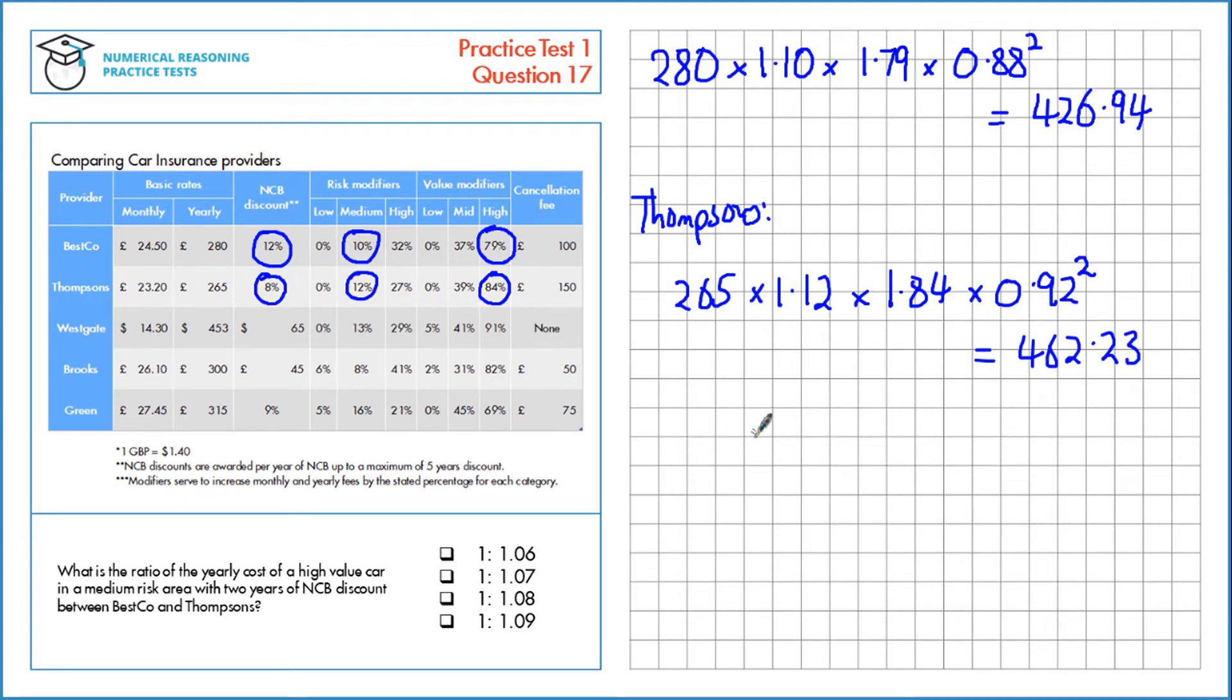Now let's form the ratio. We've got Besco to Thompsons: £426.94 to £462.23. We'll divide by the smallest number. So we have 1 to 1.08.